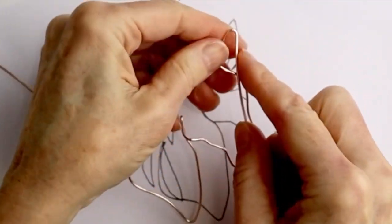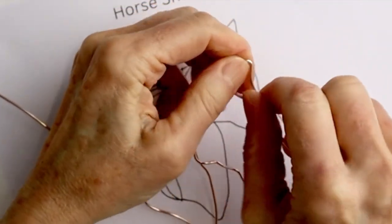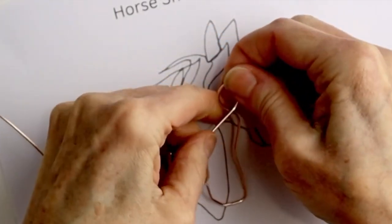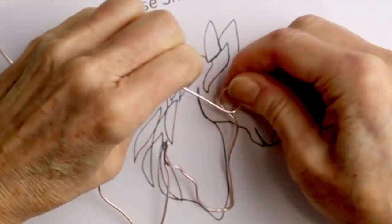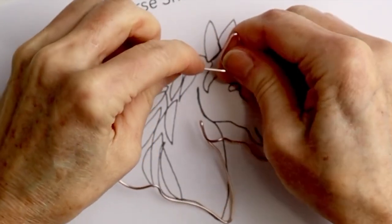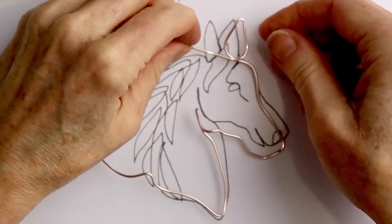Put it back on the template, adjust it as you need, and then curve it around. This copper wire is quite flexible. It's thick, but it's pretty easy to work with.